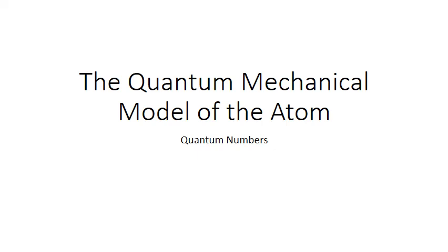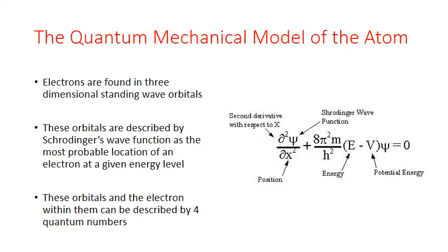In this PowerPoint, we'll explore the basics of the quantum mechanical model of the atom in more depth. In particular, we'll talk about the four quantum numbers that describe electrons and their orbitals in the Schrödinger equation. Schrödinger's equation defines the position and energy of an electron as a wave function, and these wave functions can be thought of as three-dimensional standing wave orbitals for the electrons.